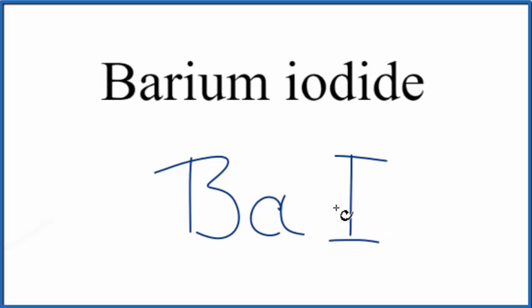So we have BAI, but now because we have a metal and a non-metal, we have an ionic compound, we need to balance the charges. So let's take a look at the periodic table here.